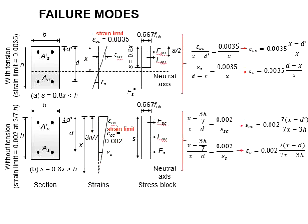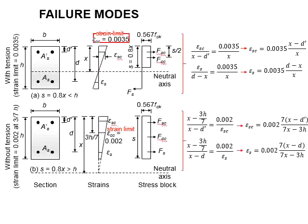Now let us look at the strength of the compression steel in the column, epsilon_sc. We are looking at two triangles. The strength limit of 0.0035 is related to the neutral axis x as shown here.